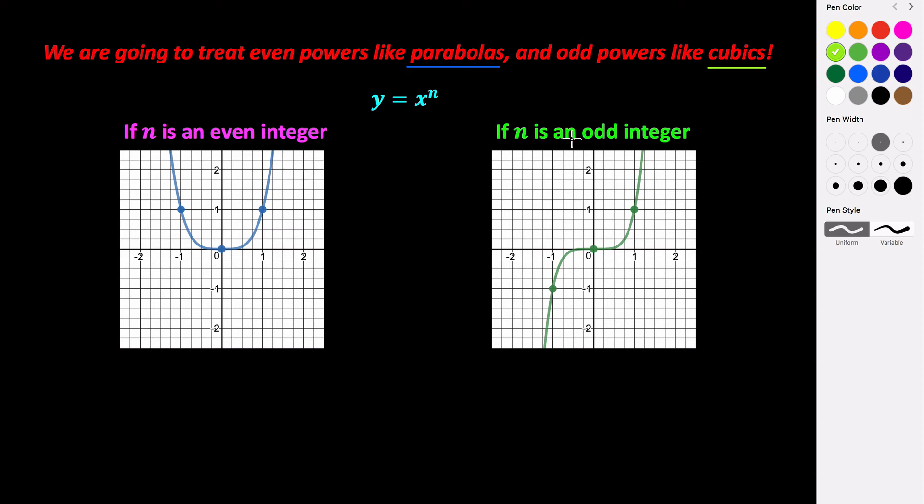If n is an odd integer, our graph is going to act like a cubic function, where it's going to start low and end high.